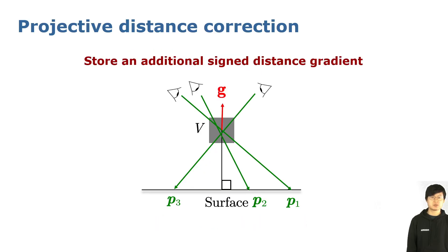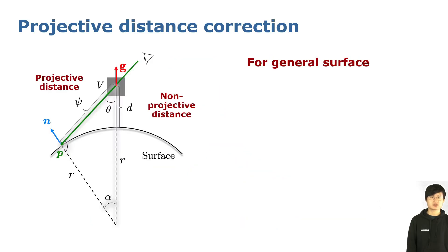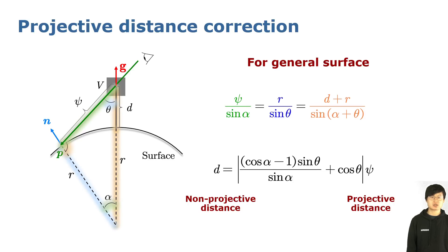To solve this issue, we propose to store an additional signed distance gradient G into each voxel. The gradient can be integrated from the surface normal, shown in blue, from different perspectives as a normalized weighted mean. The surface normal can be estimated from the range image by cross-product efficiently. With the integrated gradient G and the surface normal N, we can conduct the projective distance correction. We use the law of sines to calculate the non-projective distance D from the projected one, psi, and then integrate the non-projective TSDF by taking the weighted mean.